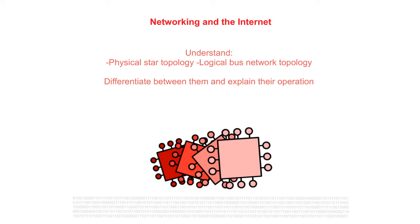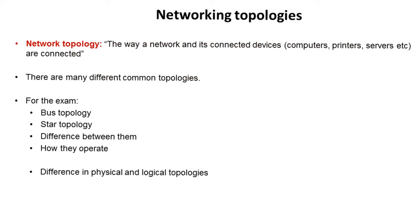In this video we'll be looking at what a physical star topology and a logical bus network topology is, differentiate between them, and explain their operation. The way a network is connected — in other words, the way the computers, printers and servers are all joined together — is called the network topology. For the exam you need to know about the bus topology and the star topology, the differences between them and how they operate.